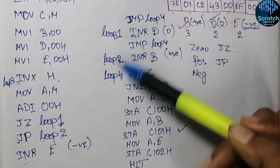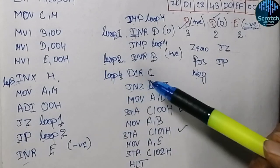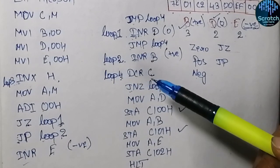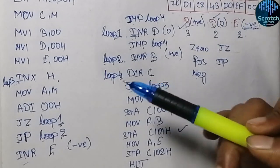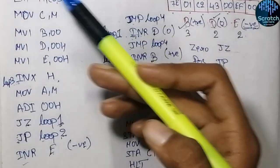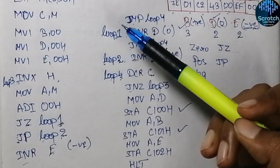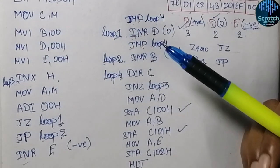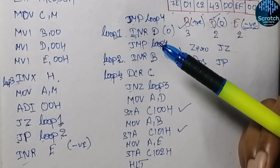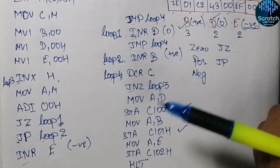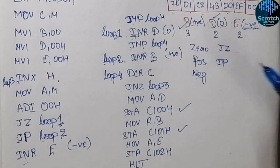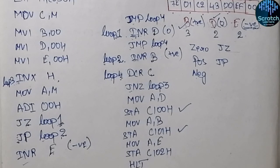There are many loops used here, that's why it seems a bit difficult, but if you practice it will become easier. I have a separate playlist of assembly language programming for the 8085 microprocessor on my channel, so you can watch those videos as well. If you are liking my videos, please subscribe to the channel to support me. Hope to see you in the next video, thank you.